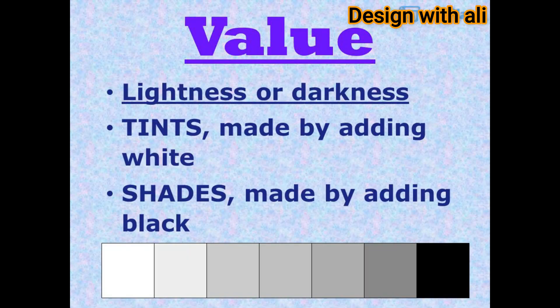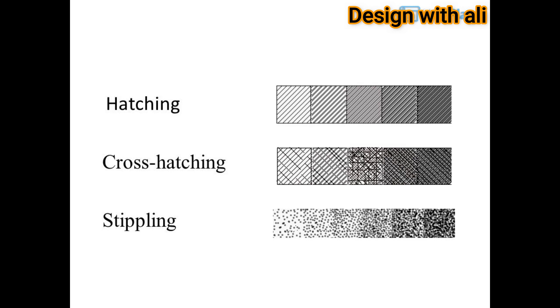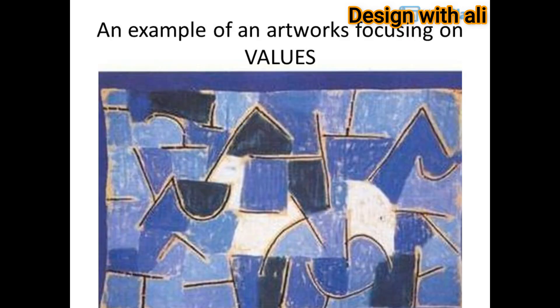Value refers to the lightness or darkness of a color. Tints are made by adding white, and shades are made by adding black. Techniques to show value include hatching, cross-hatching, and stippling. Here is an example of an artwork focusing on values.